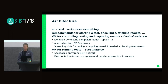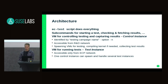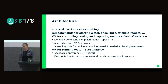The architecture of the ec test script is such that there is a main ec test command and everything else is implemented as a subcommand. There are subcommands for starting new tests, for checking the status of tests, and for fetching results back from the cloud to your local machine.